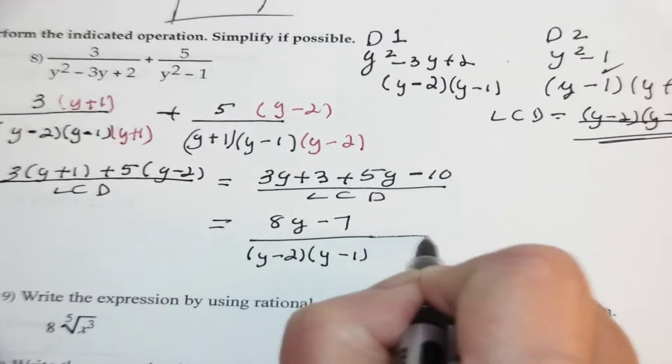They have the same denominator, so this is going to be 3 times (y plus 1) plus 5 times (y minus 2) over the LCD, which equals 3y plus 3 plus 5y minus 10, all over the LCD, which is 8y minus 7 over (y minus 2)(y minus 1)(y plus 1). Nothing reduces out, so that's where we're left.